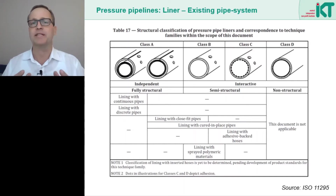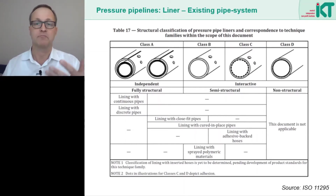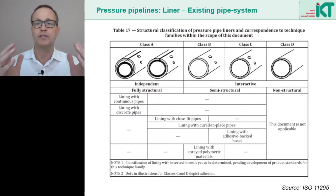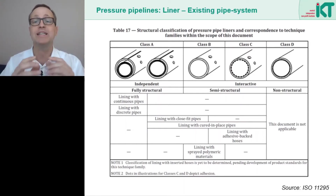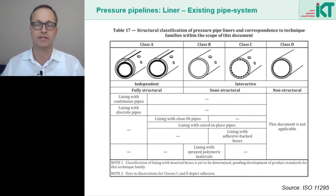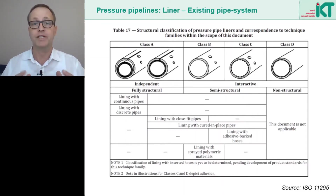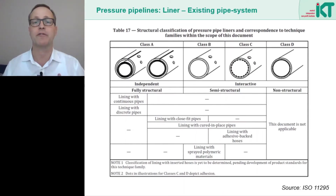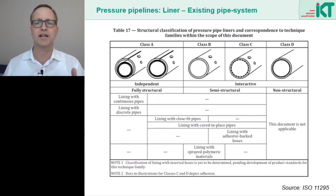Class B does essentially the same as Class C — it bridges defects and protects against corrosion. For this reason both Class B and Class C are called semi-structural. Unlike Class C, however, Class B is not bonded to the old pipe, so under external water pressure such as groundwater, the liner would collapse if it did not have its own stiffness. This stiffness is the characteristic of a Class B liner. Class A is the royal class of pressure liners — it protects against corrosion, can bridge defects, and can also bear the entire internal pressure on its own. The wall thickness is therefore sized so that the pressure can be taken up according to the boiler formula. These liners are called fully structural.